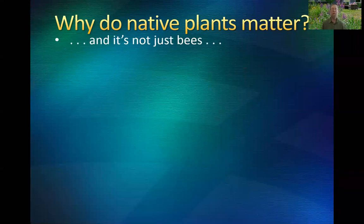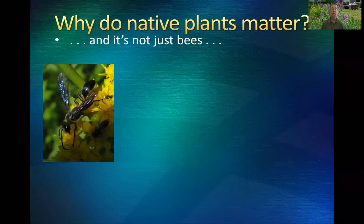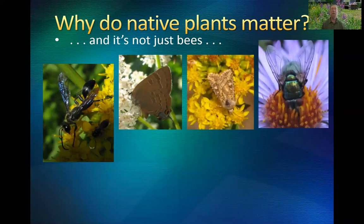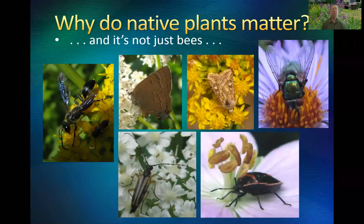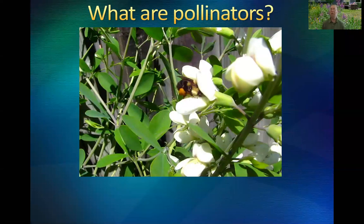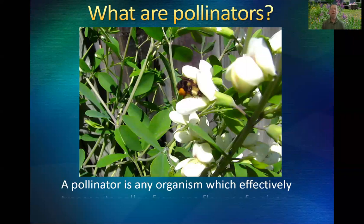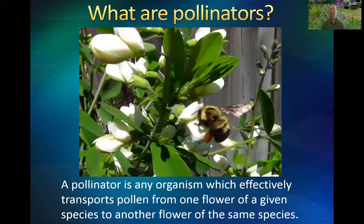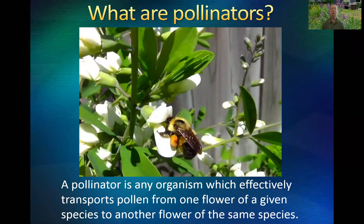I've talked about bees so far, but clearly there are other pollinators. Wasps can be very important pollinators, as can butterflies, moths, flies, beetles, and a handful of other insects and even some non-insects. Many of these are dependent on, or at least prefer, native plant environments. My definition of a pollinator: any organism which effectively transports pollen from one flower of a given species to another flower of the same species.